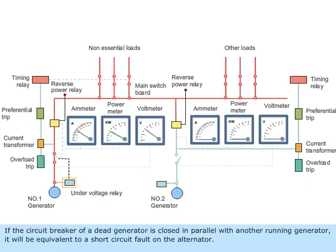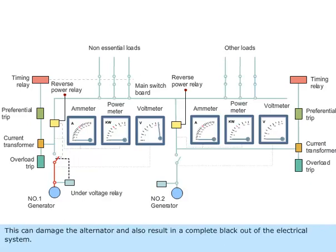If the circuit breaker of a dead generator is closed in parallel with another running generator, it will be equivalent to a short circuit fault on the alternator. This can damage the alternator and also result in a complete blackout of the electrical system.